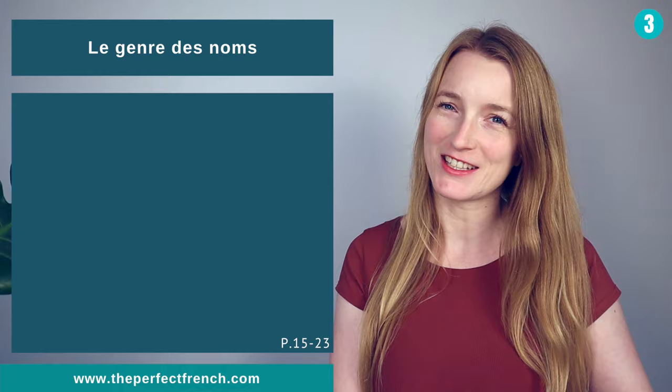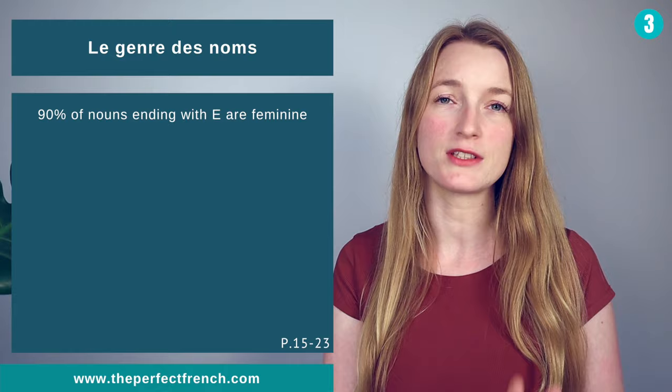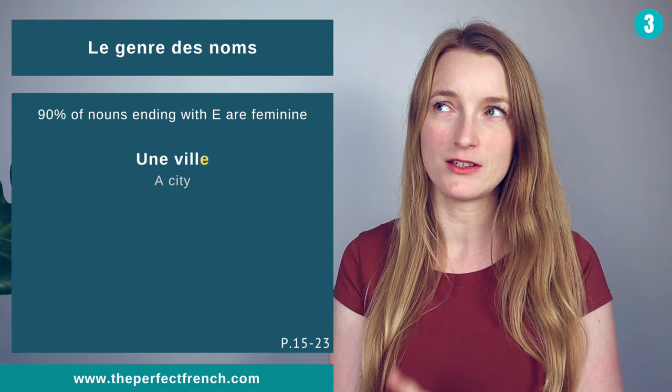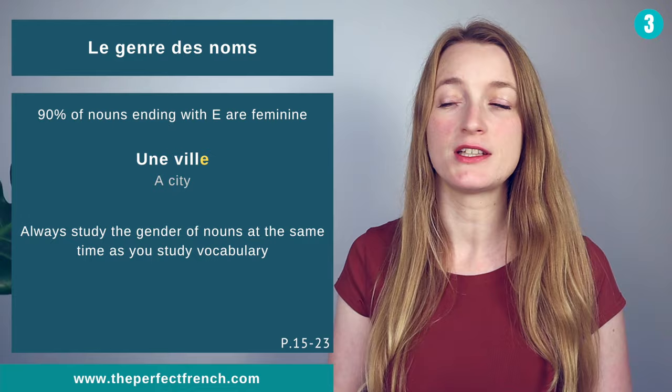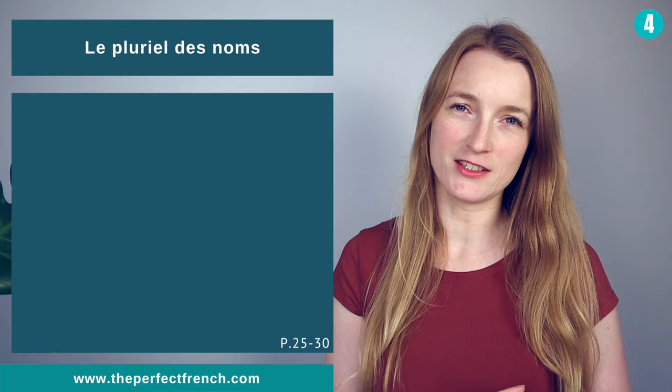Which brings us to le genre des noms — the gender of nouns. Remember the rule that 90% of nouns ending with a are going to be feminine nouns. For example: une ville — a city — feminine noun. Always study the gender of nouns at the same time as you study vocabulary. Study right away un or une with the noun.